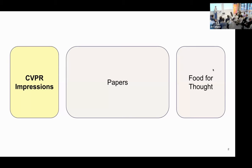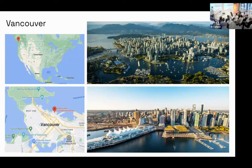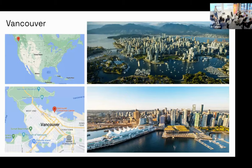Starting with CVPR impressions — if you don't know where Vancouver is, it's on the southwest side of Canada. It's a really beautiful town; the city center is surrounded by the sea with mountains in the back and snow on top. You could look out the window and see sea, mountains, and snow simultaneously. The conference happened at the Vancouver Convention Center in the north of the city center, directly at the seaside.